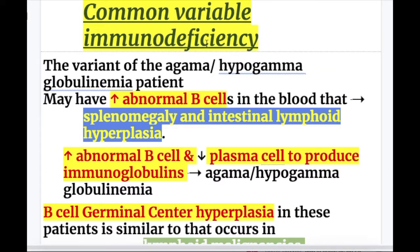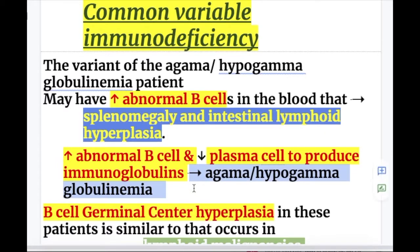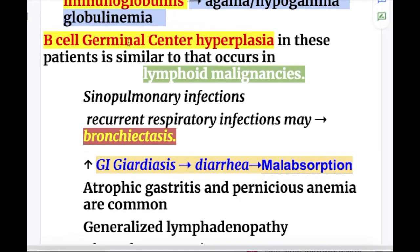Common variable immunodeficiency disorder is a variant of agammaglobulinemia or hypogammaglobulinemia. Patients may have an increased number of abnormal B cells in the blood, which causes splenomegaly and intestinal lymphoid hyperplasia. The increase in abnormal B cells and decrease in plasma cells leads to reduced immunoglobulin production. B cell germinal center hyperplasia in these patients is similar to that occurring in lymphoid malignancy.